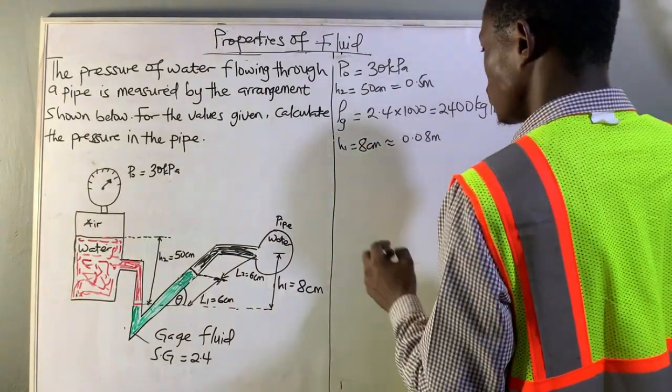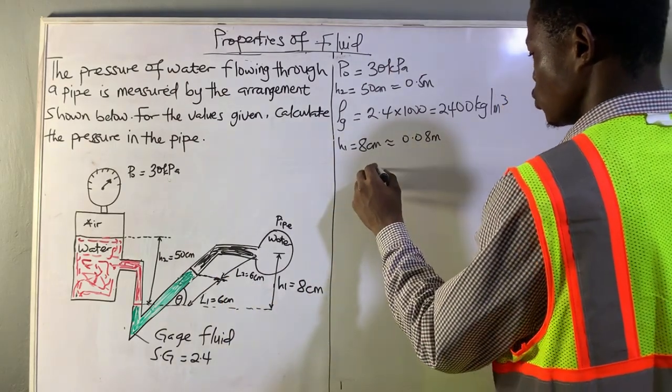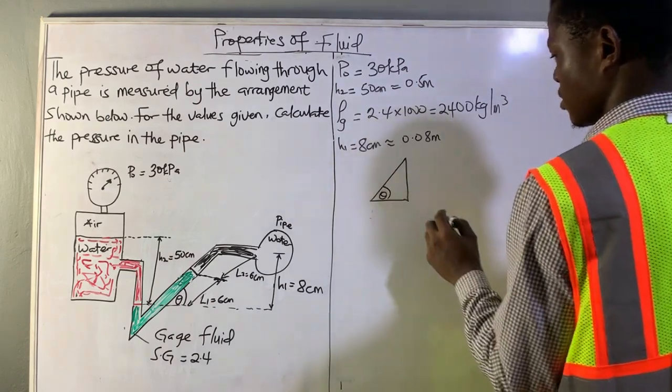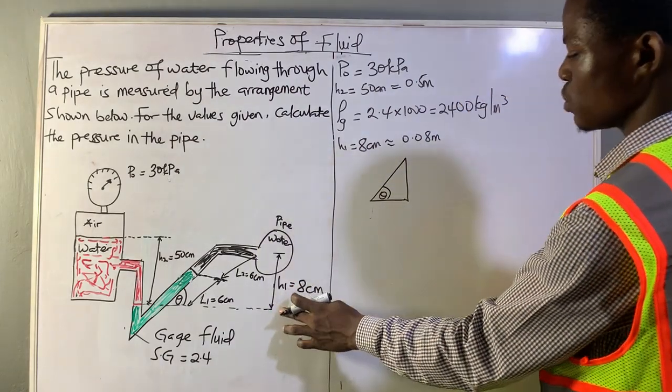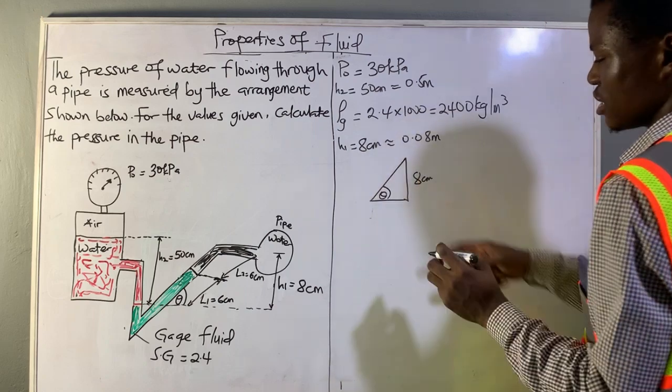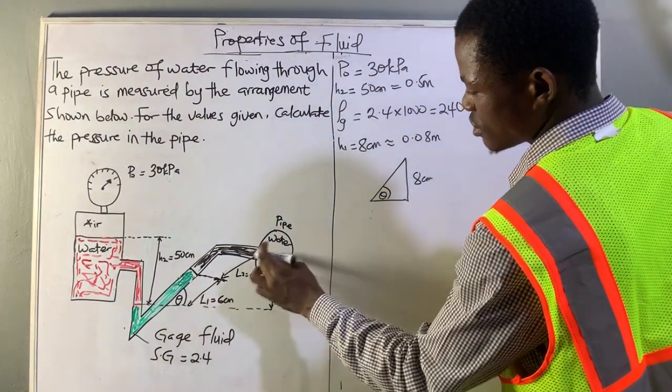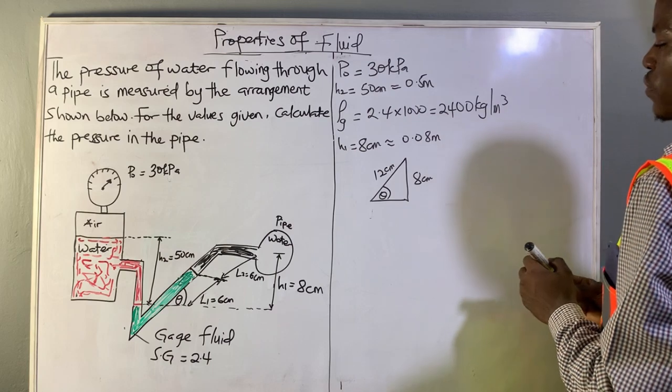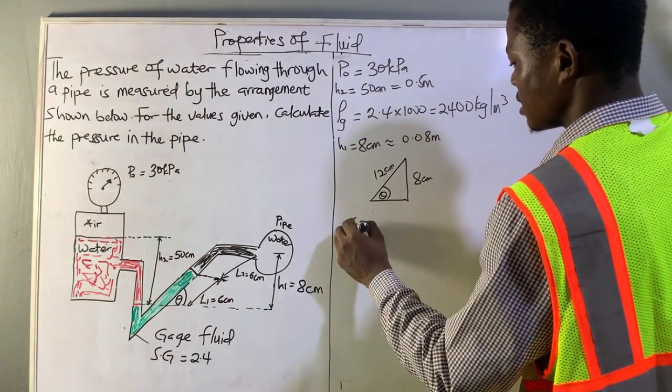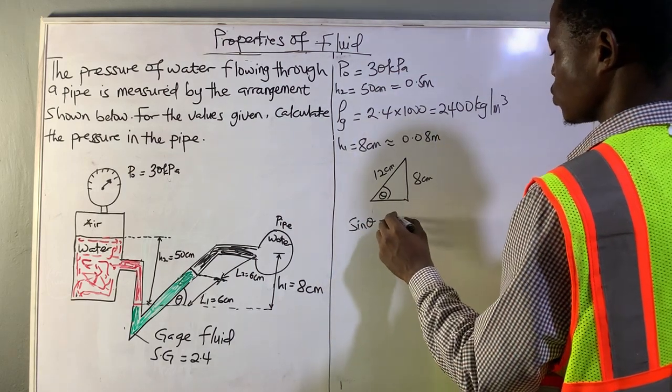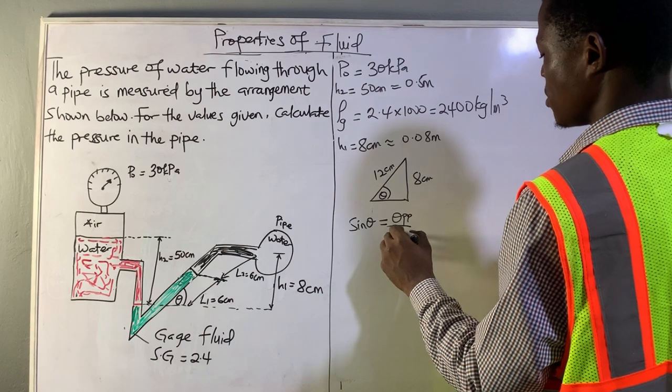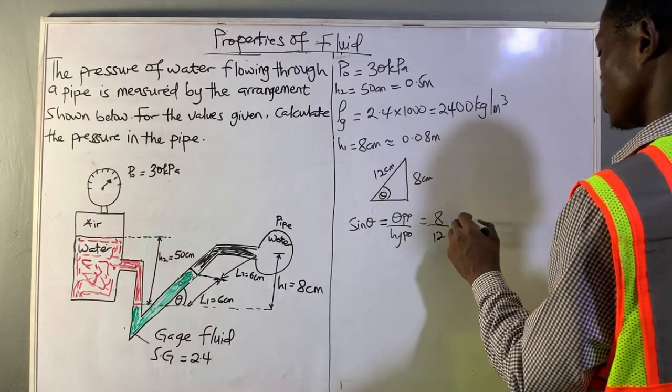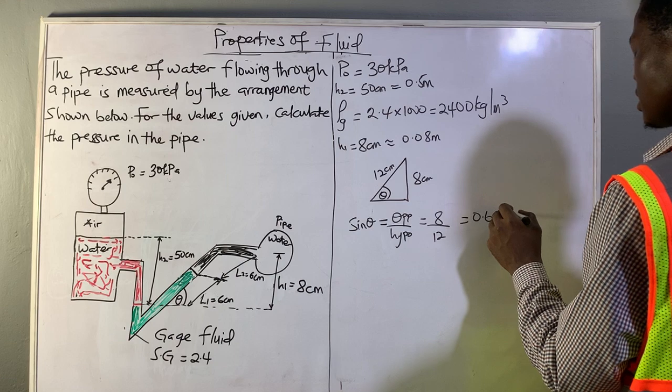In finding the vertical height, we can resolve this into this figure here and have our vertical height being H1, that's 8 centimeters. We have the total length here, which is 6 plus 6, giving us 12 centimeters. So to find theta, we can write sine of theta, which equals the opposite over the hypotenuse, which is 8 over 12, giving us 0.6667.